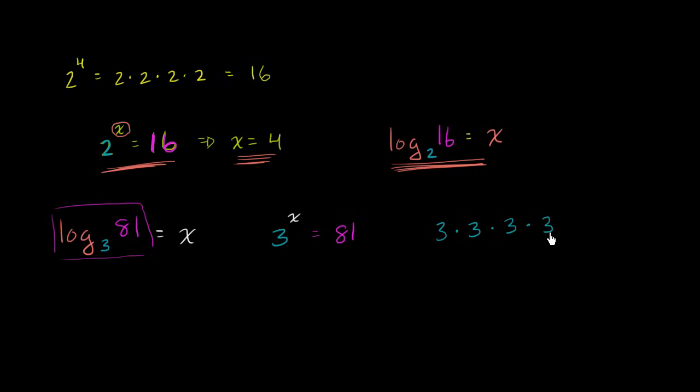3 to the fourth power, 27 times 3, is equal to 81. 3 to the fourth power is equal to 81. x is equal to 4. So we could say log base 3 of 81 is equal to 4.